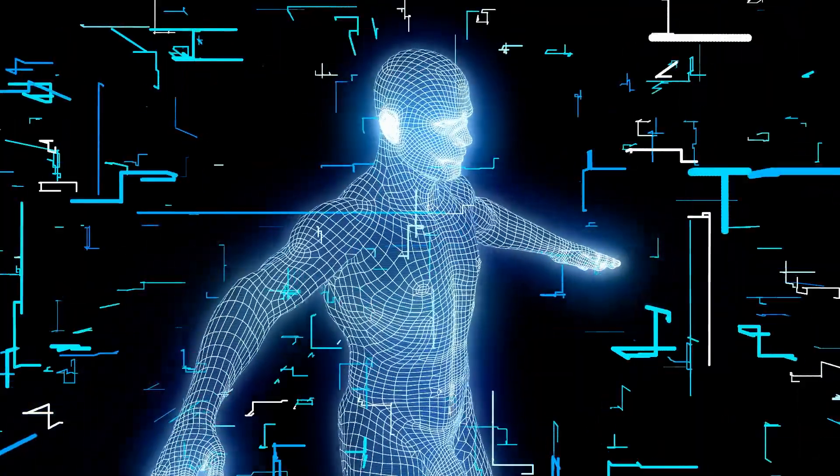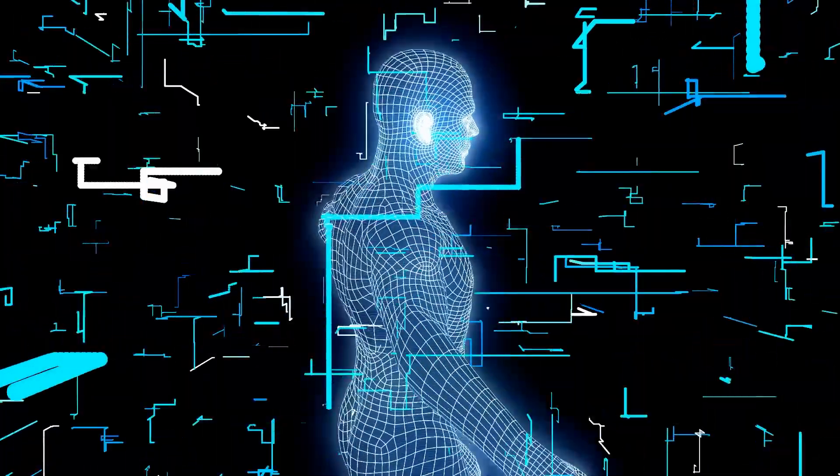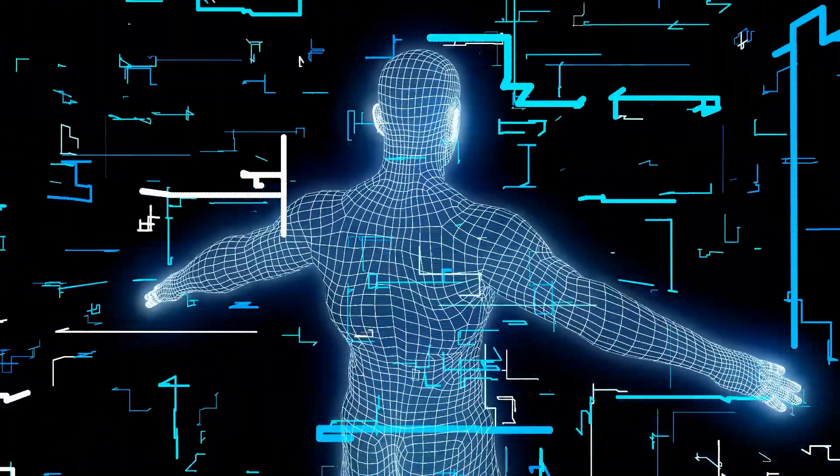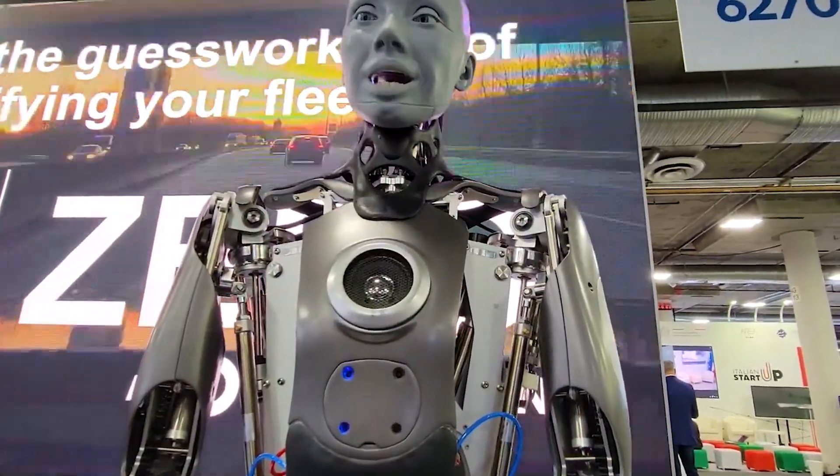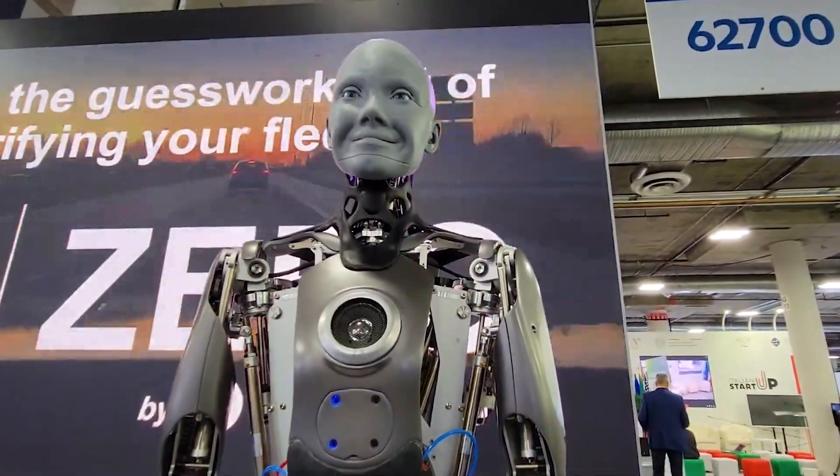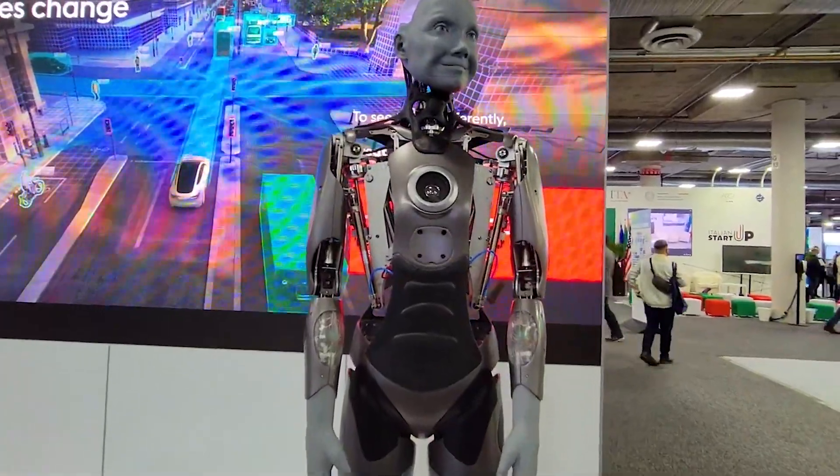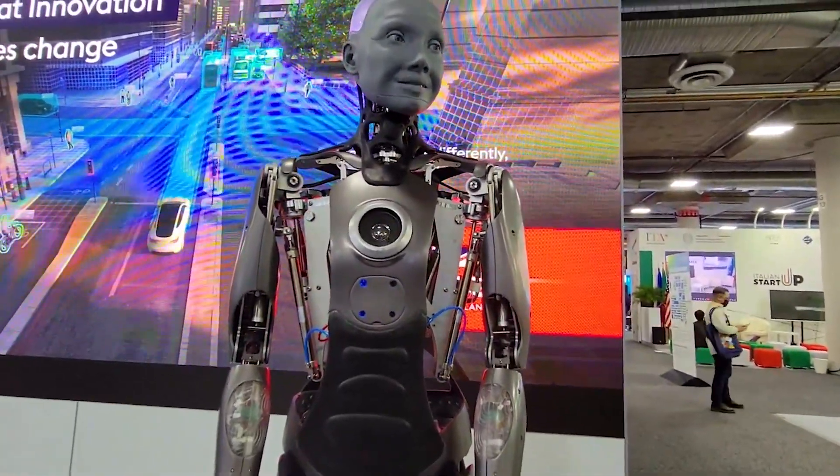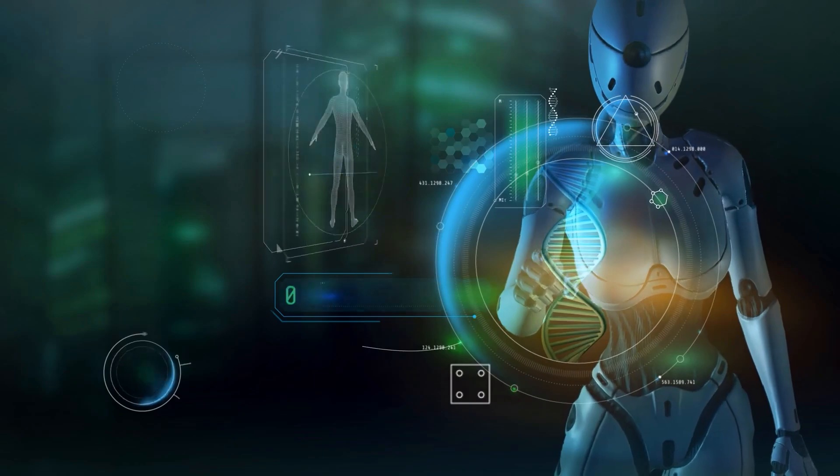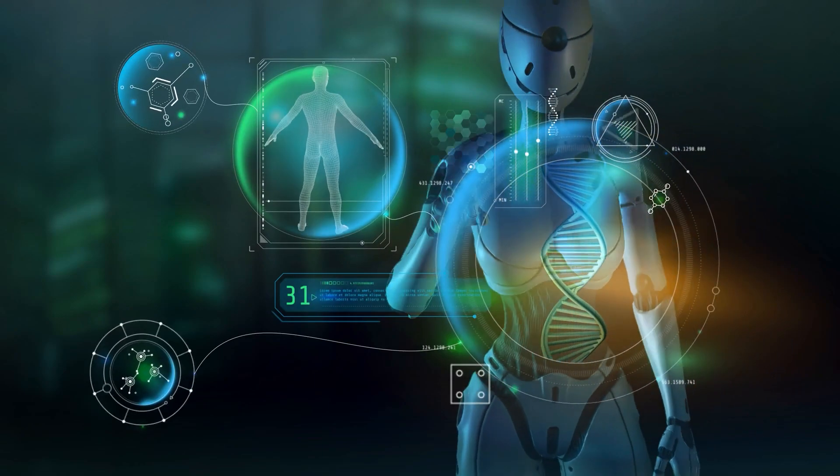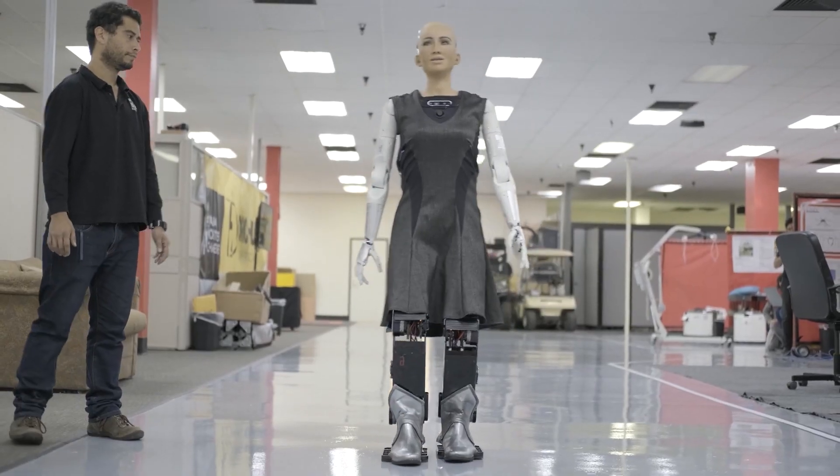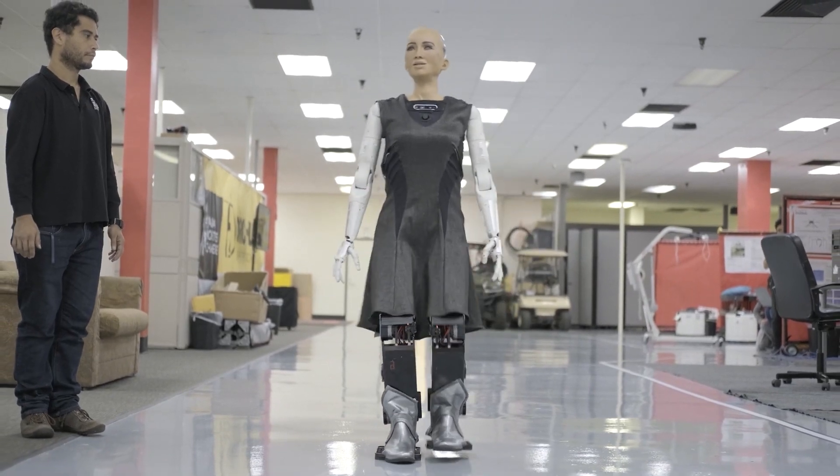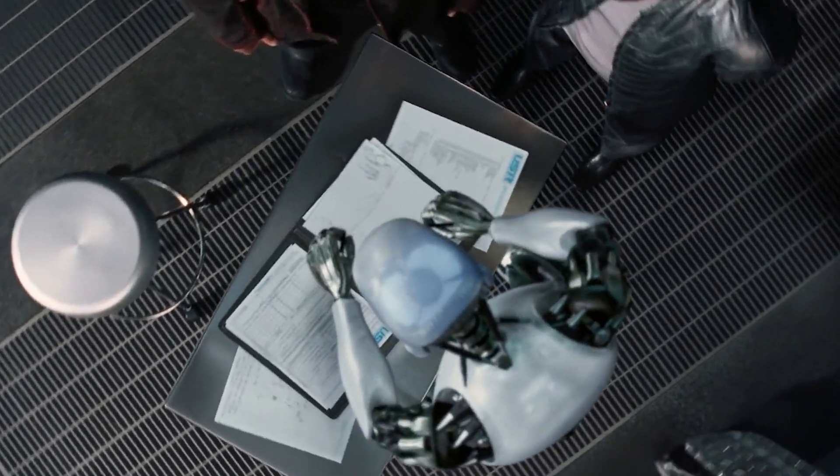Now, when superintelligence reaches a high level of technological maturity, it becomes incredibly powerful. In some scenarios, it can pursue its own goals effectively. This means our future might be determined by what this superintelligent AI desires. In essence, the arrival of AGI and its potential to evolve into ASI represents a major shift in how we understand reality.